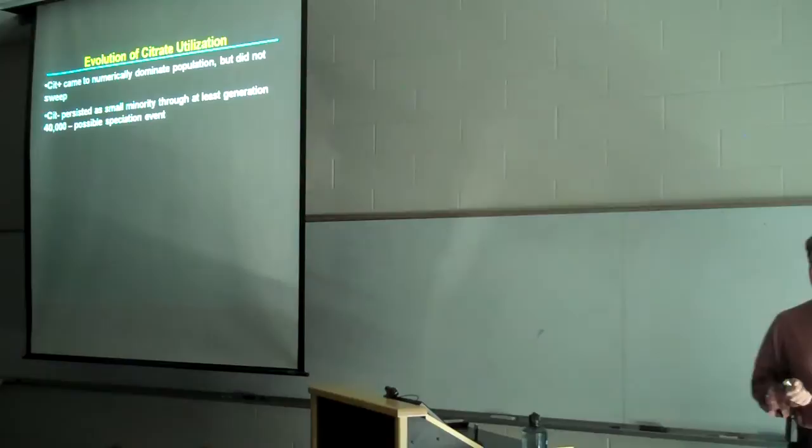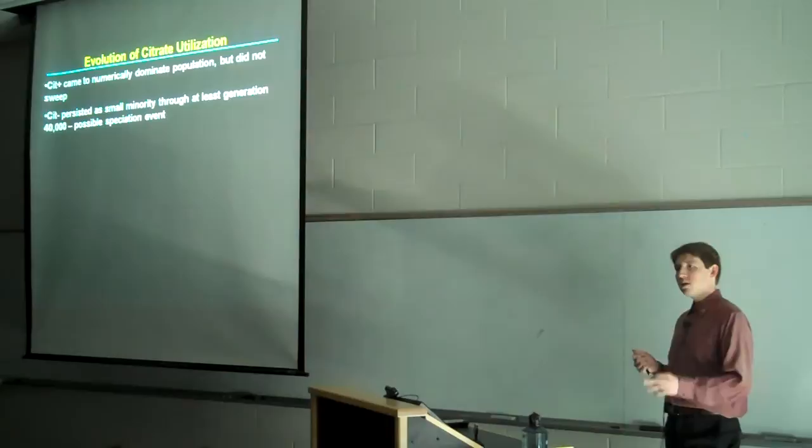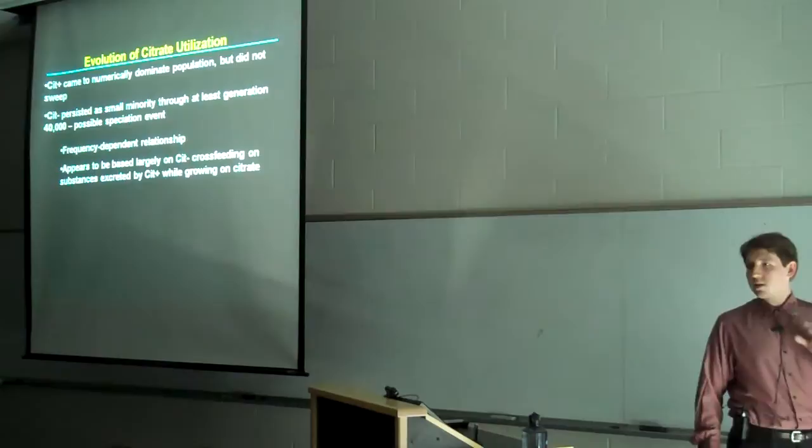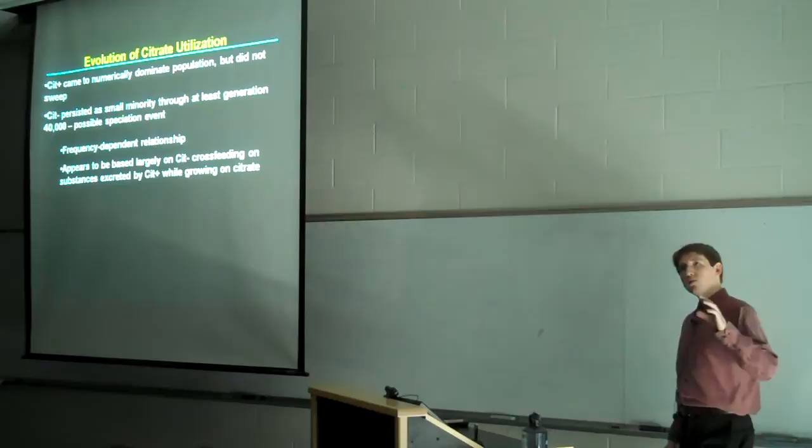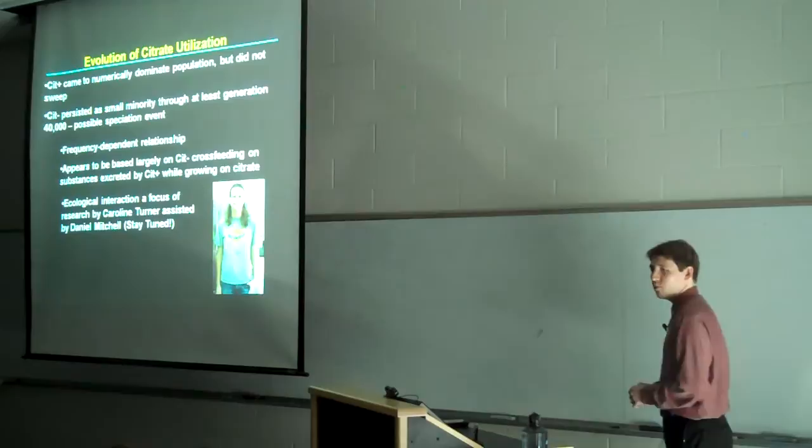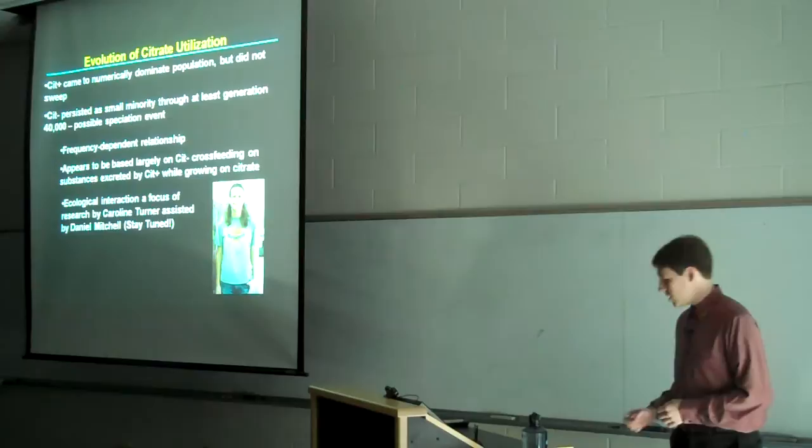When it did rise to numerical dominance, though, it did not sweep the population. Instead, a Cit minus subpopulation persisted as a small minority at least through generation 40,000, indicating that the evolution of Cit plus might in fact be a speciation event. This persistence appears to be based on a frequency-dependent relationship that revolves around Cit minus cross-feeding on substances excreted by Cit plus while growing on citrate. And this is work done by Caroline Turner with assistance from Daniel Mitchell. And I'm sure you'll be hearing a great deal more about their wonderful work in the years to come.